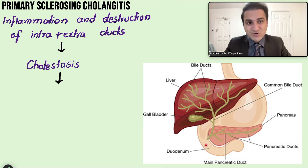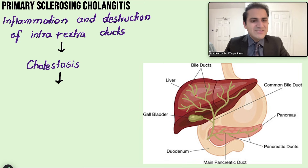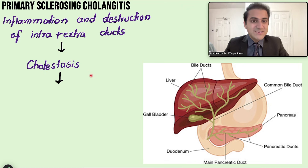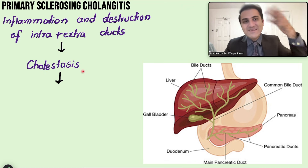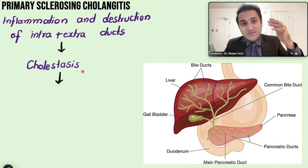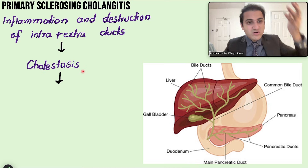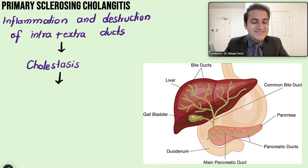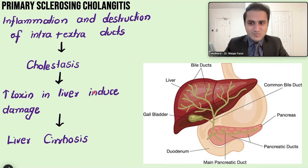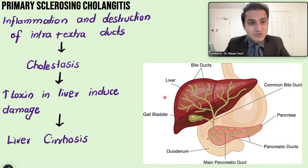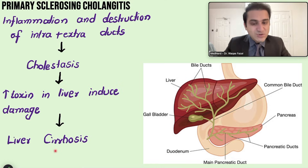Whenever there is cholestasis — blockage of bile flow — bile leaks into the blood, causing a buildup of toxins. Because the liver cannot excrete these toxins, they accumulate in the liver and induce damage, eventually leading to liver cirrhosis and tender right upper quadrant.